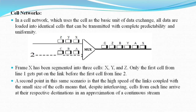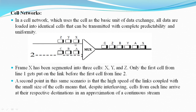Cell networks. Many of the problems associated with frame inter-networking are solved by adopting a concept called cell networking. A cell is a small data unit of fixed size. In a cell network, which uses the cell as the basic unit of data exchange, all data are loaded into identical cells that can be transmitted with complete predictability and uniformity. Because each cell is the same size and all are small, the problems associated with multiplexing different size frames are avoided.